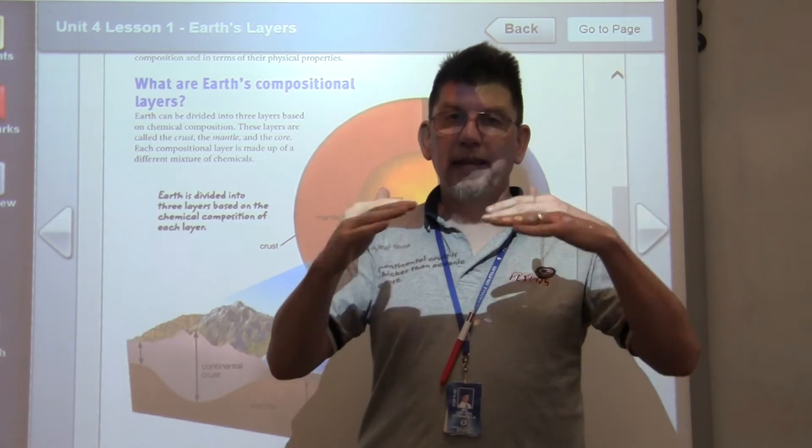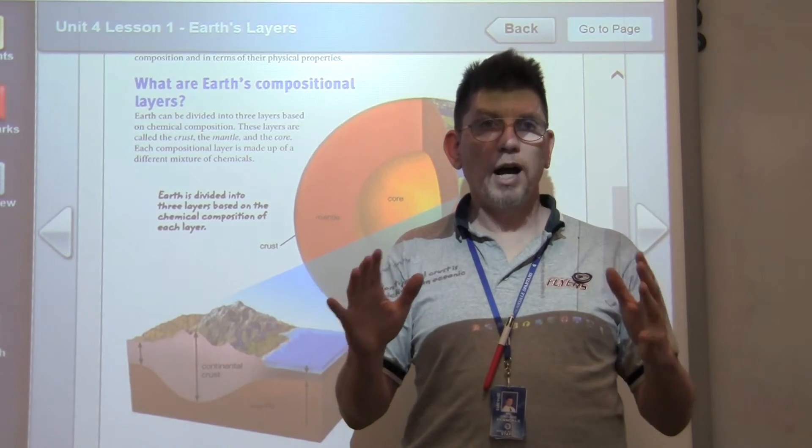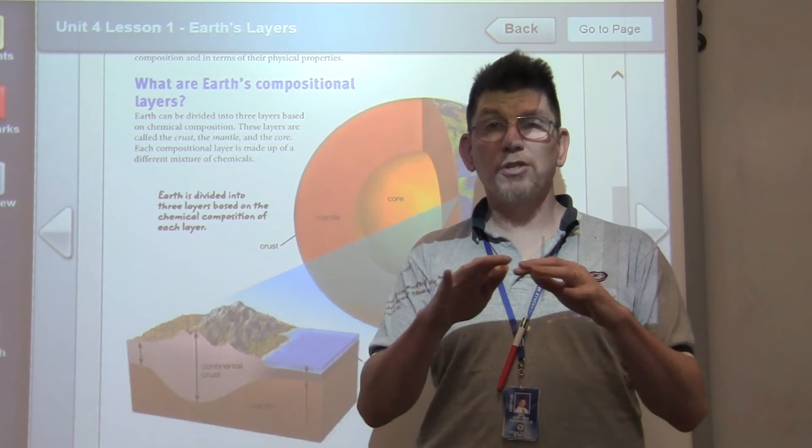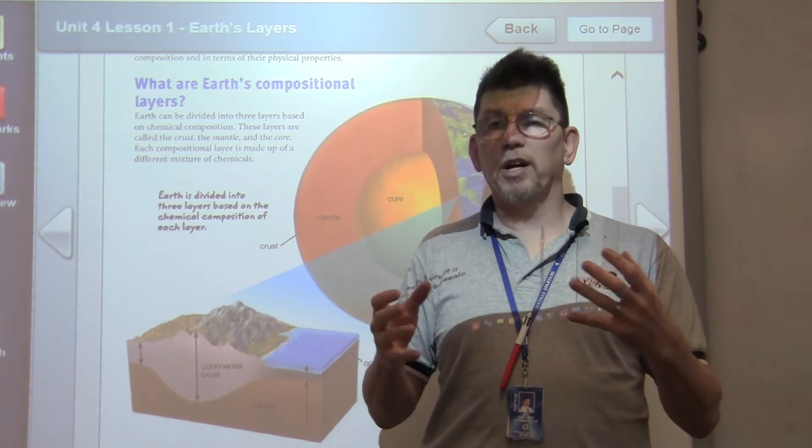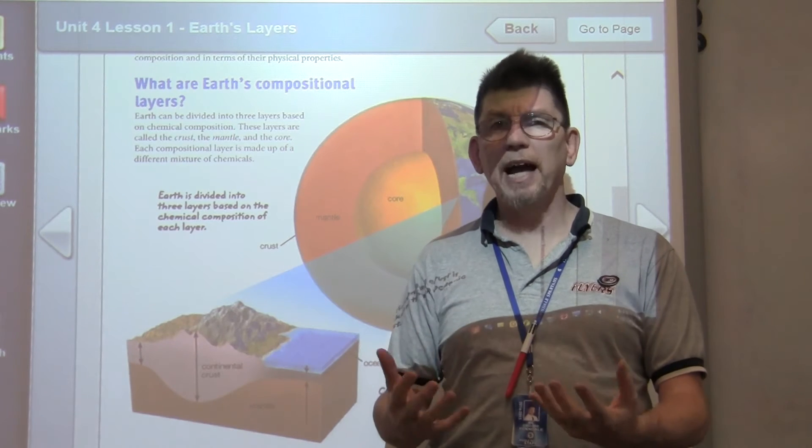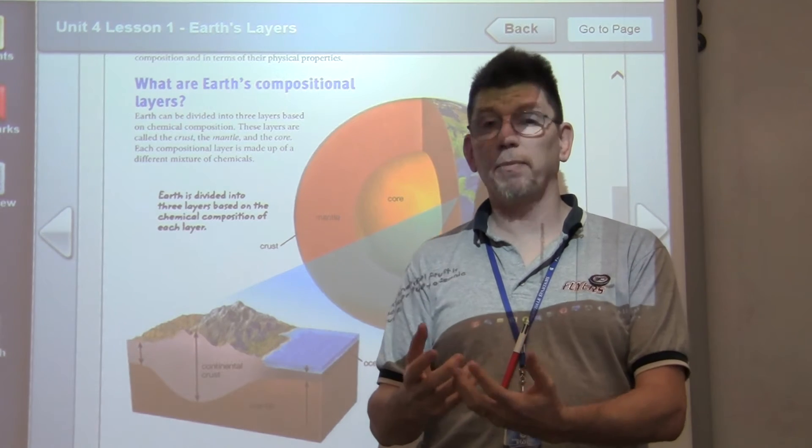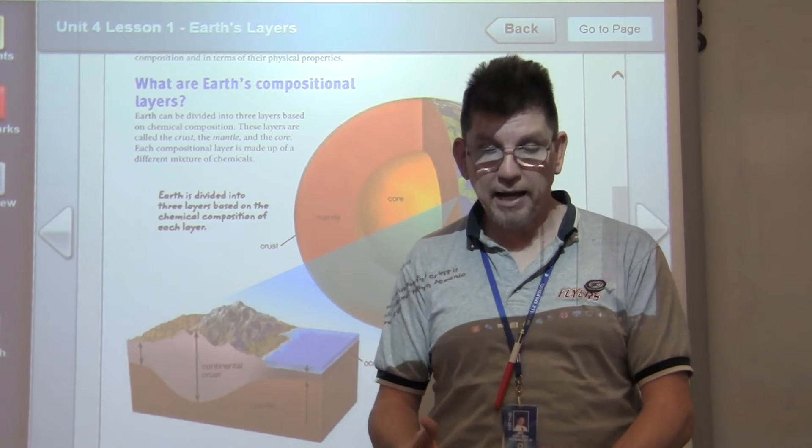We get to the core. Down there, there's almost no oxygen or silicon. It's all metal. It's mostly iron and nickel and other types of heavier elements, radioactive elements, which gives the core some of its heat and why it's so hot down there.